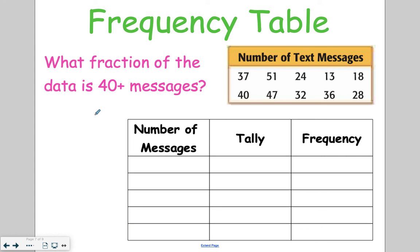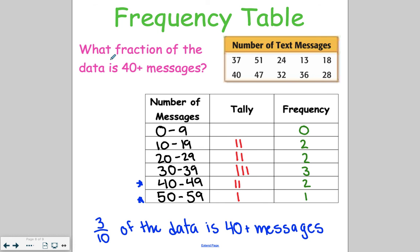Go ahead and make this frequency table on your own, and then answer the question, what fraction of the data is 40 plus messages? I went ahead and I counted by 10s again. I started with 0 to 9. There was nothing in that range. Then we've got 10 to 19, 20 to 29, 30 to 39, 40 to 49, 50 to 59. And we find that the last two are going to be our 40 plus. So we get 3 out of the total of 10 options. If you have questions about this or anything else from the lesson, please feel free to reach out and let me know.